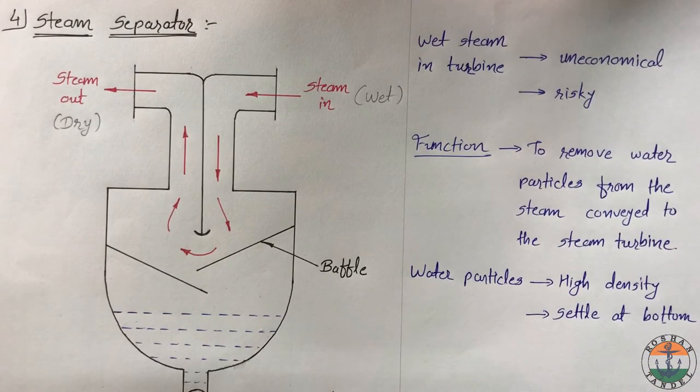You may get dry or superheated steam in the boiler, but in many cases there will be a loss of heat from steam while it is flowing in a steam pipe from boiler to the turbine. So there will be condensation in the steam pipe.